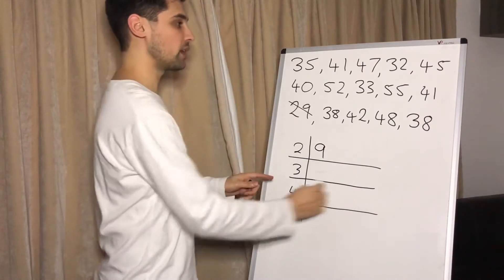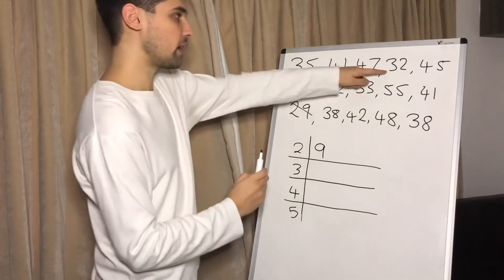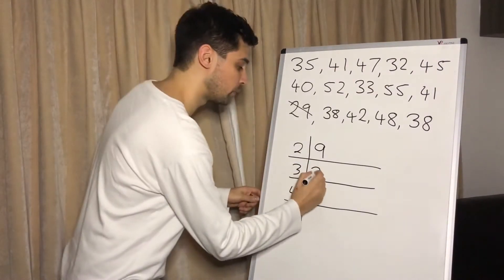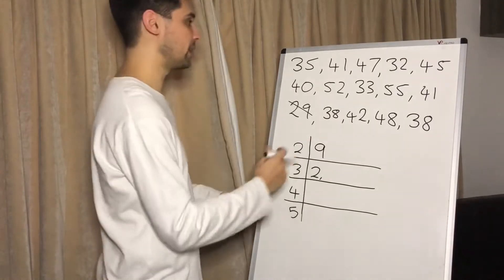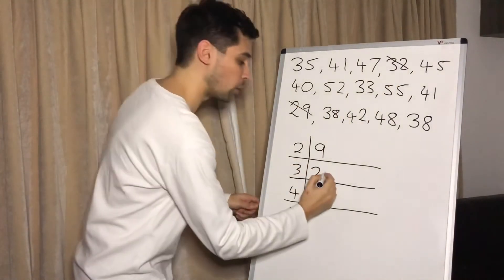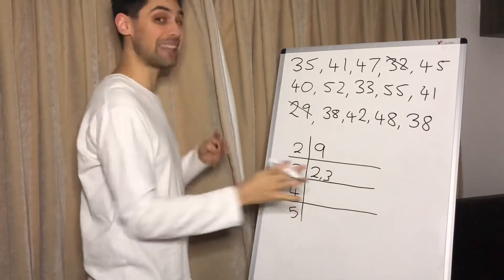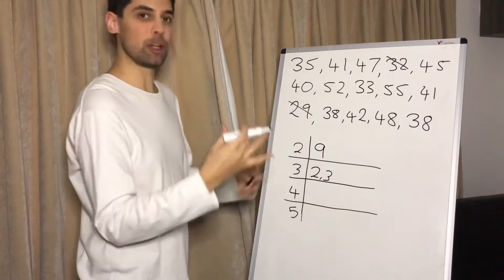Now we're going to deal with the 30s. So what's the smallest number in the 30s? It looks like it's going to be the 32 up here, so we'll put a 2. Now comma to separate from the next one, get rid of that 32, looks like it's going to be the 33. Now what you could do is write these numbers in order first before we even get to the stem and leaf, but I'm taking a little bit of a shortcut here.